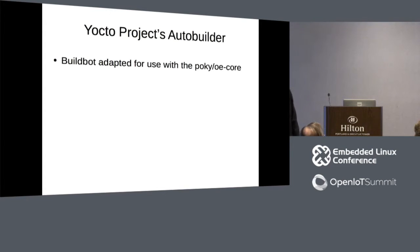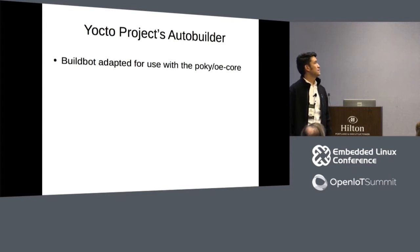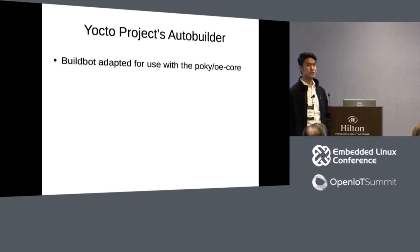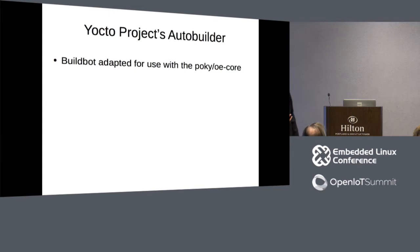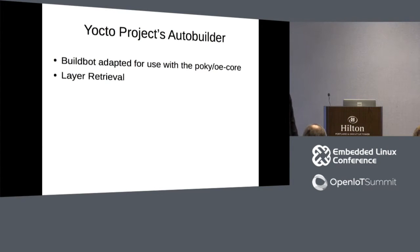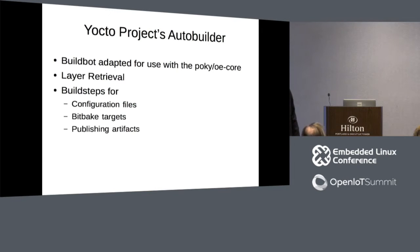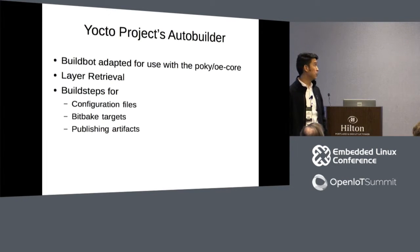We decided to use the Yocto Project's AutoBuilder because it was there and it's open source. It's based on BuildBot, a Python library which allows you to more easily do continuous integration. The AutoBuilder code adds support for layer retrieval — all the layers you need — and custom build steps to handle the things you have to do as a developer of OpenEmbedded Core: creation of configuration files, building different BitBake targets, and artifact publication.